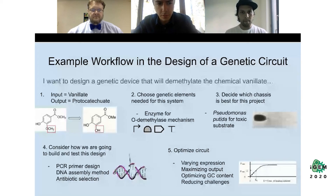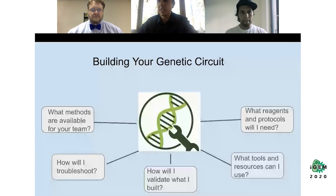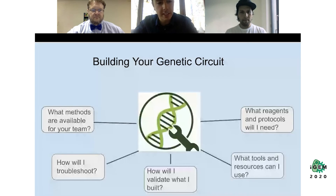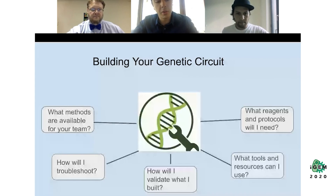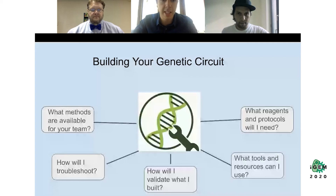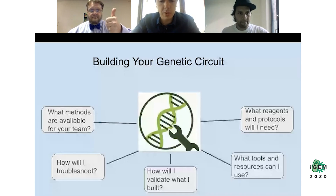Moving to building your genetic circuit: considerations include what methods are available to your team, how you will troubleshoot — do you have a mentor or PI there for you? — since PIs often have specific specialties that don't span all of synthetic biology. How will you overcome challenges your specific PI can't help with? How will you validate what you built? It's important for measurement that what you built is exactly what you say your genetic device is doing — and this also helps you earn iGEM medals.